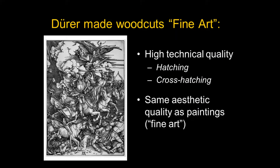He takes what was the lowly woodcut and uses some of the same devices you use in painting, except for color: foreshortening, figures that appear to turn in space, representing different textures. The figures are well proportioned, well thought out, they seem to exist in space — one horseman is behind the other. Essentially they have the same aesthetic quality as paintings, except for color, and it's of extremely high technical quality.